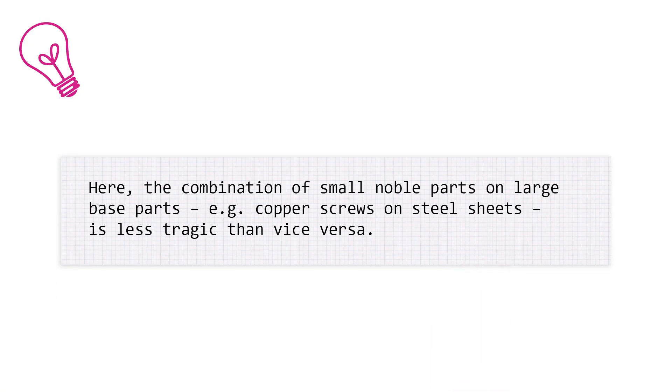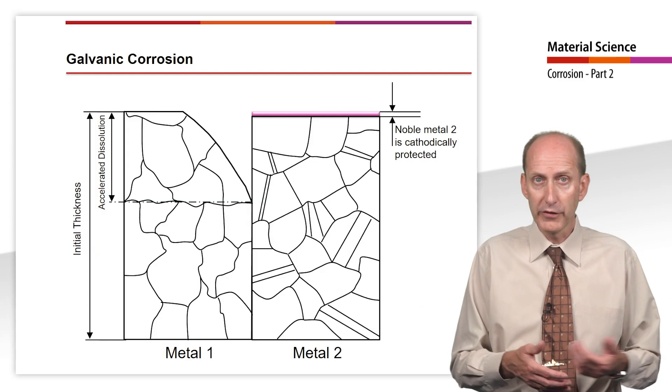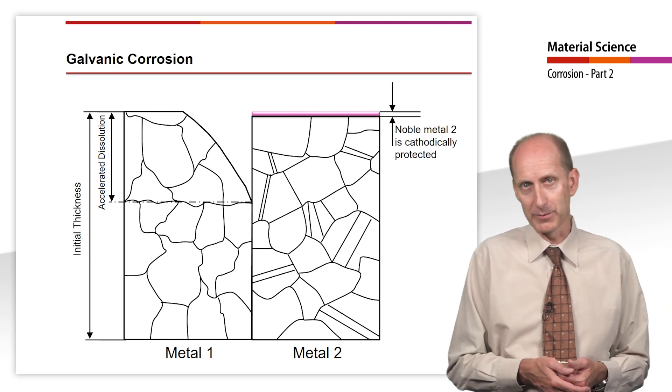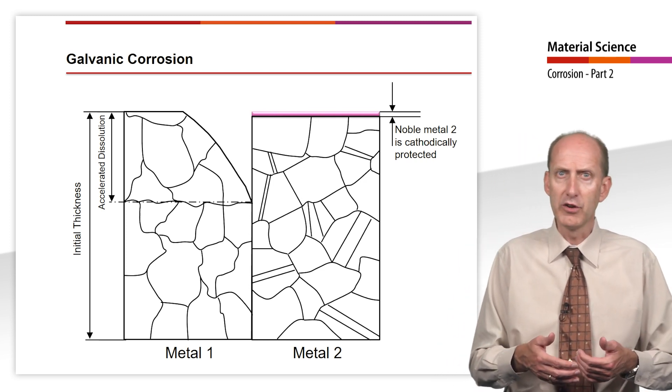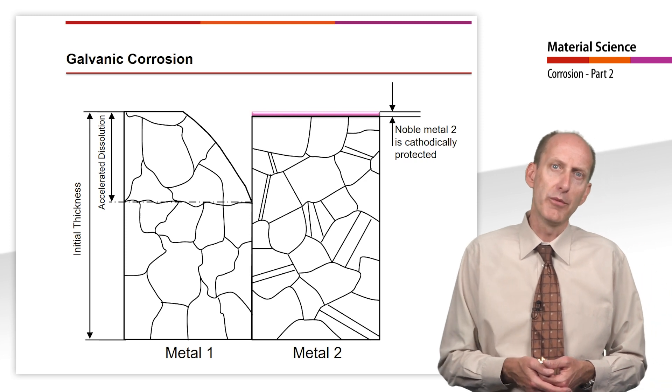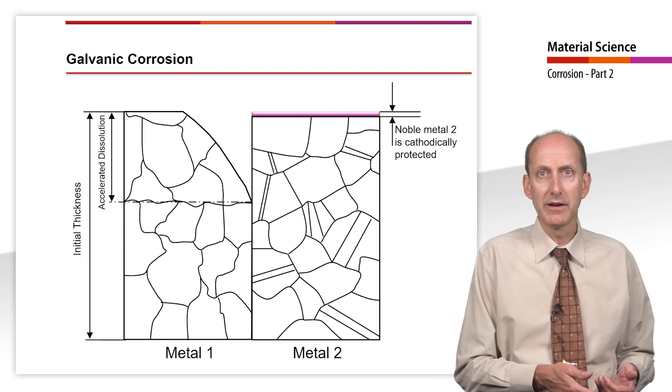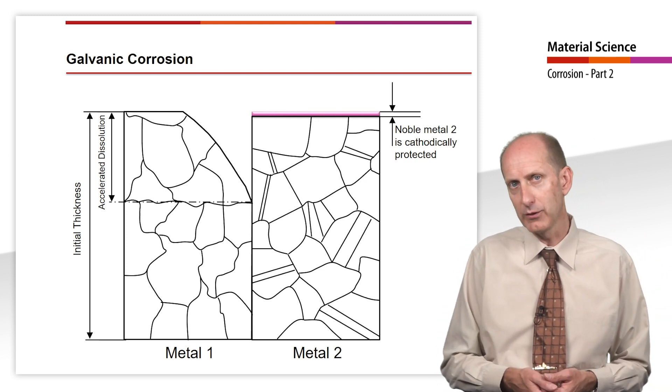Here, the combination of small noble parts on large base parts, for example copper screws on steel sheets, is less tragic than vice versa. This figure schematically shows galvanic corrosion. The considerable removal of material from the base metal at the contact point is clearly visible.